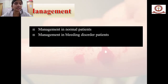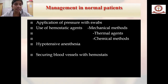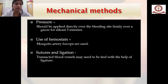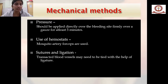Management can be classified into management of the normal patient and management of the bleeding disorder patient. For a normal patient, the basic steps include application of pressure with a cotton swab, use of hemostatic agents — either mechanical, thermal, or chemical methods — using hypotensive anesthesia, and securing blood vessels with hemostats. Mechanical methods include application of pressure, use of hemostasis, sutures, and ligation.